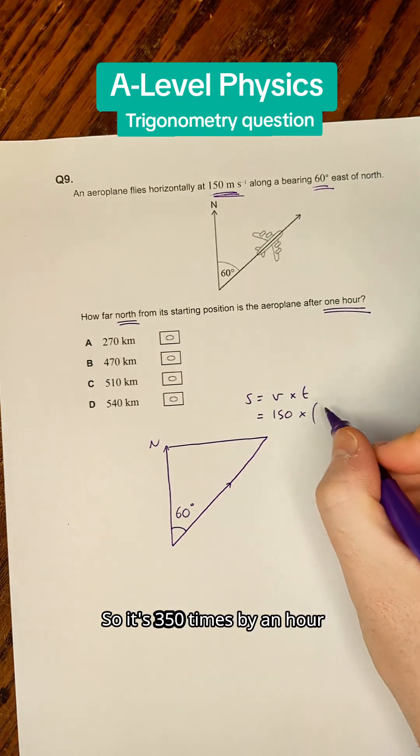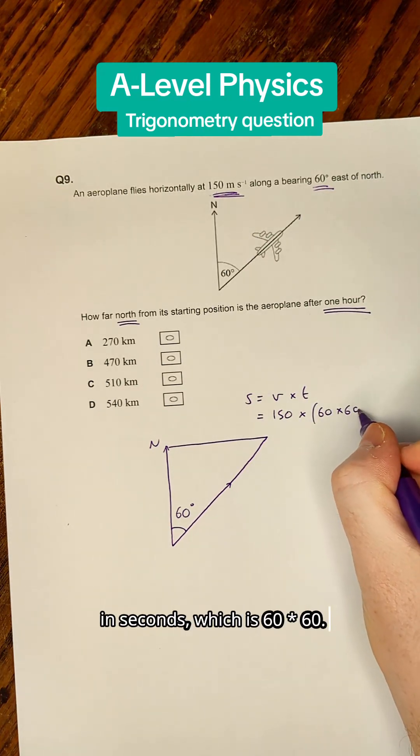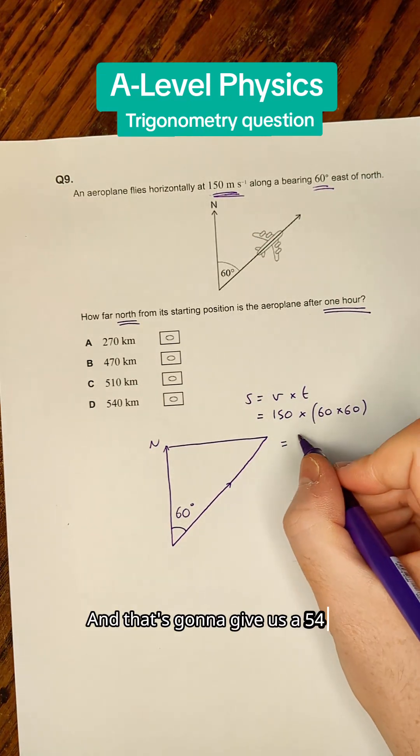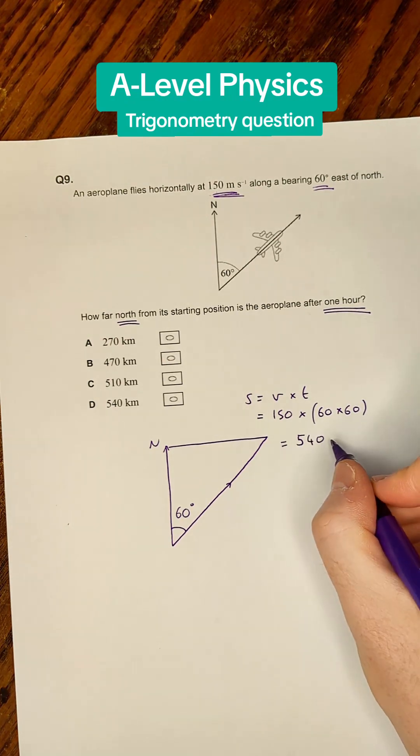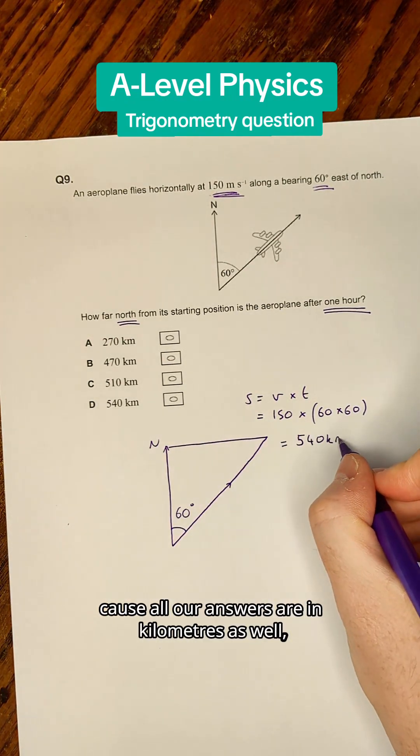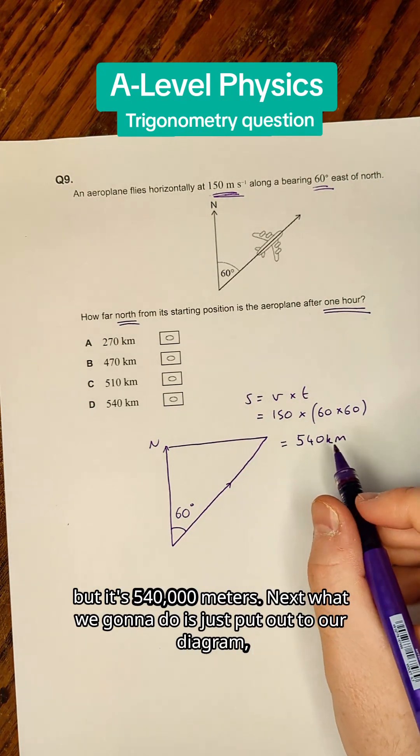So it's going to be 150 times an hour in seconds, which is 60 times 60, giving us 540. I'm going to leave it in kilometers since all our answers are in kilometers, but it's 540,000 meters.